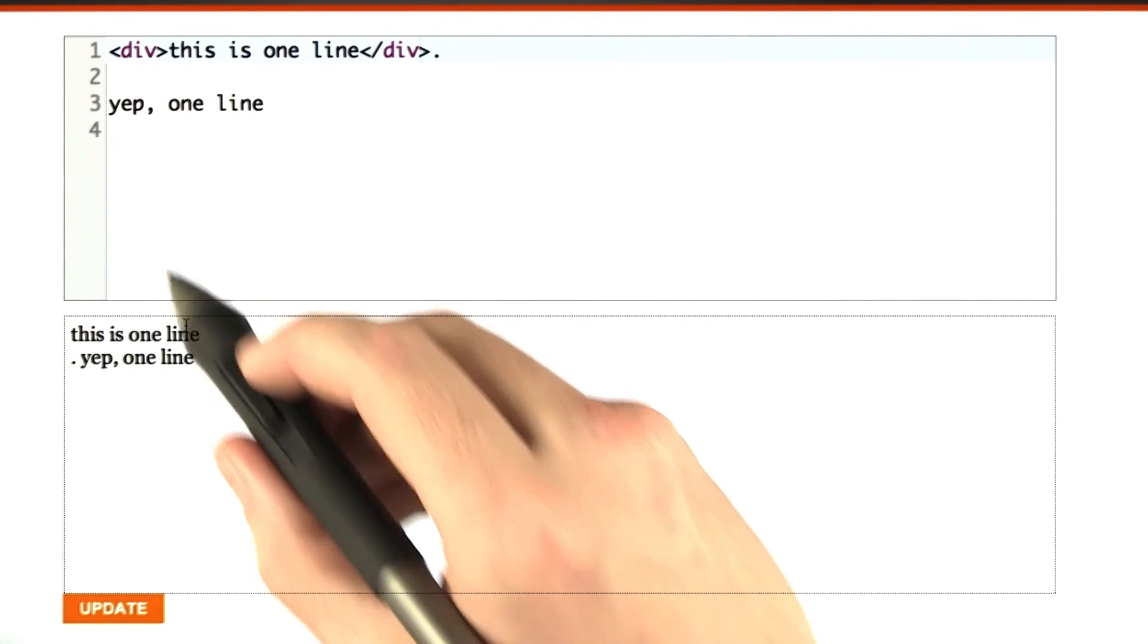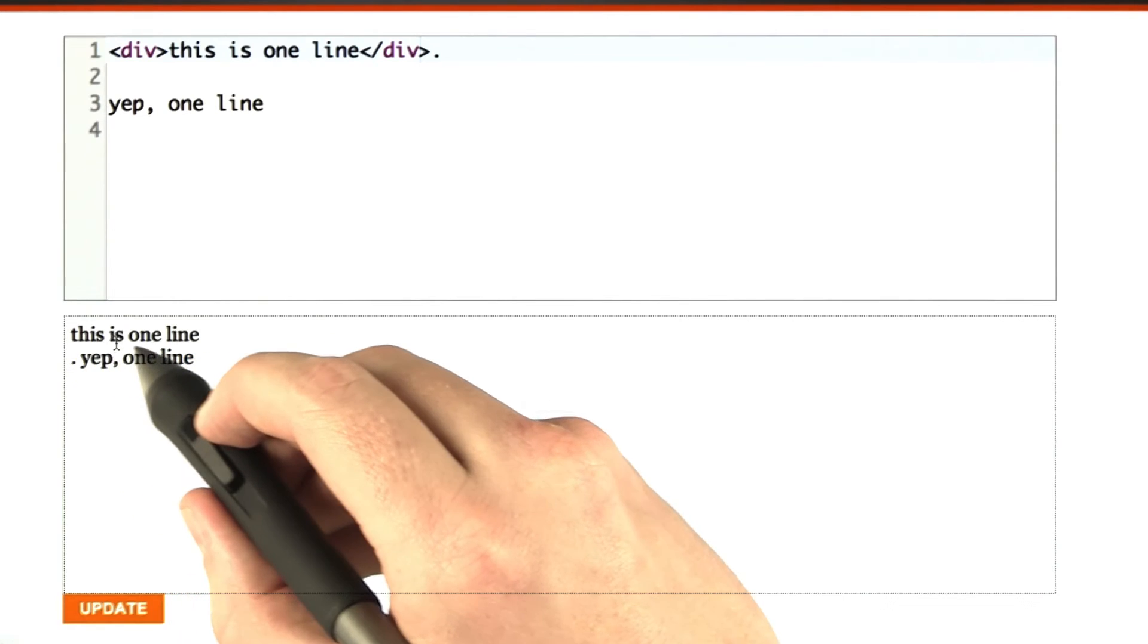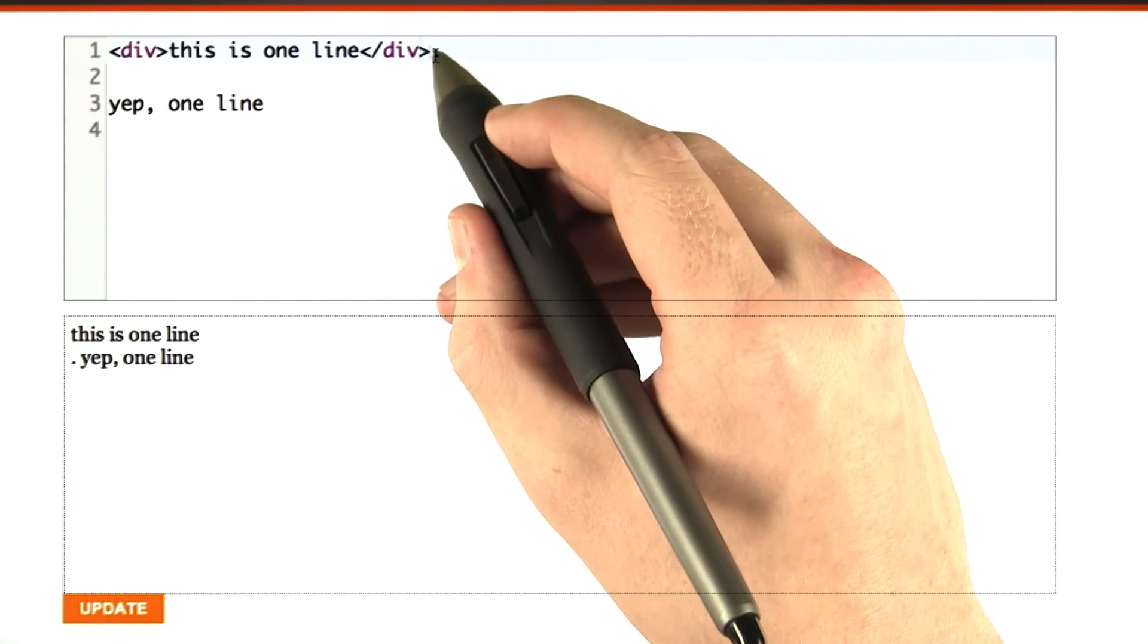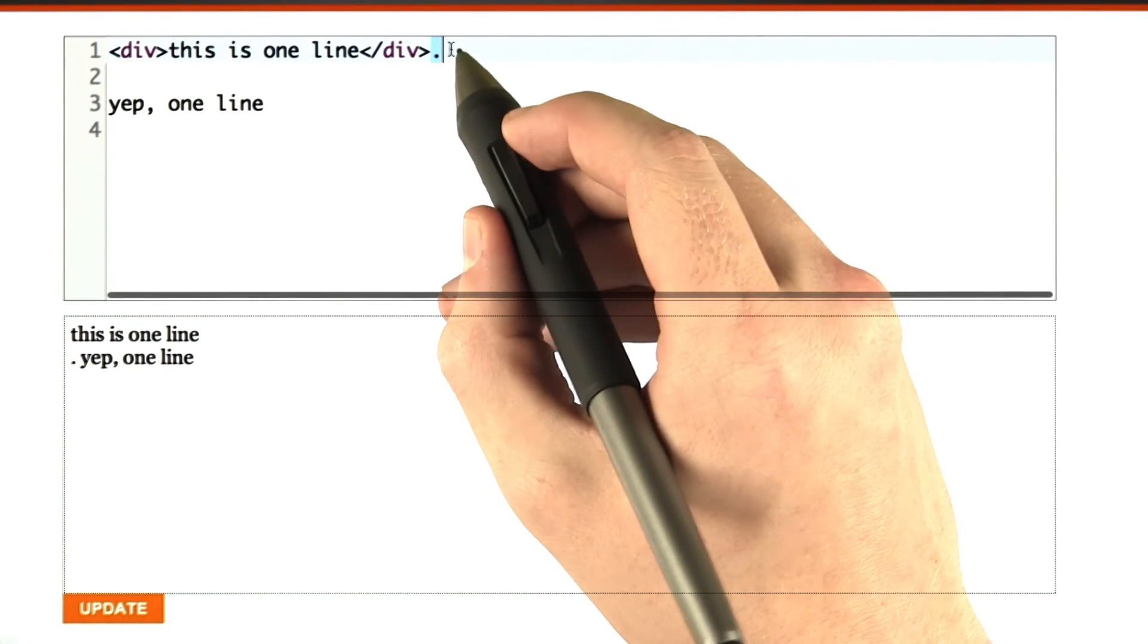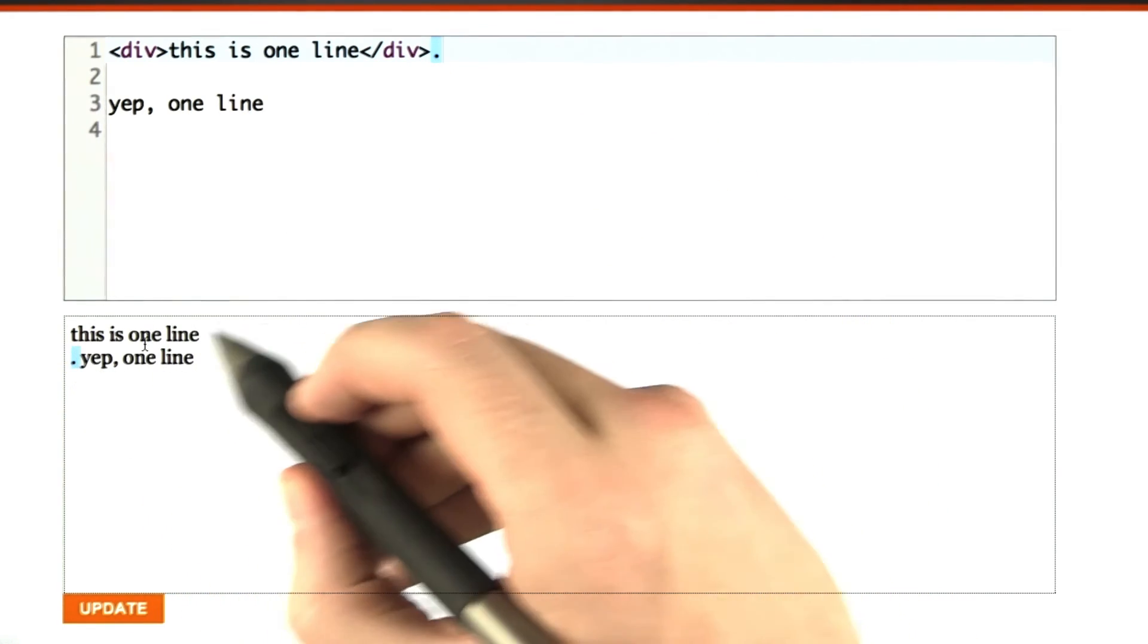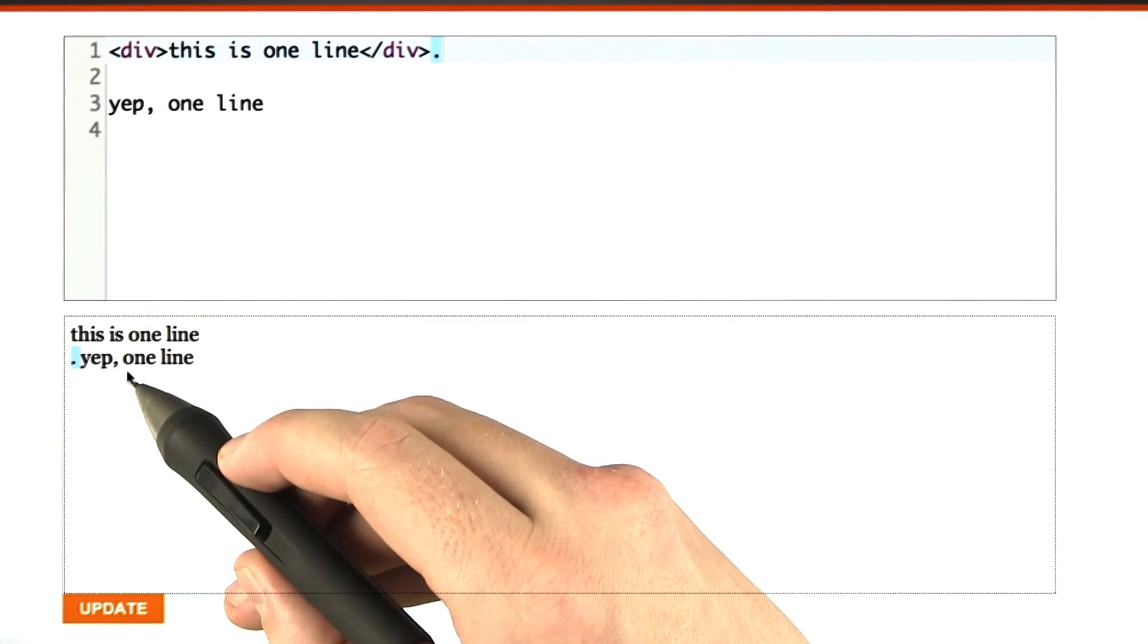This div actually creates a box around this piece of text. And you can see we actually did something interesting. I added a little period after the div, and the period appears down on the second line here.